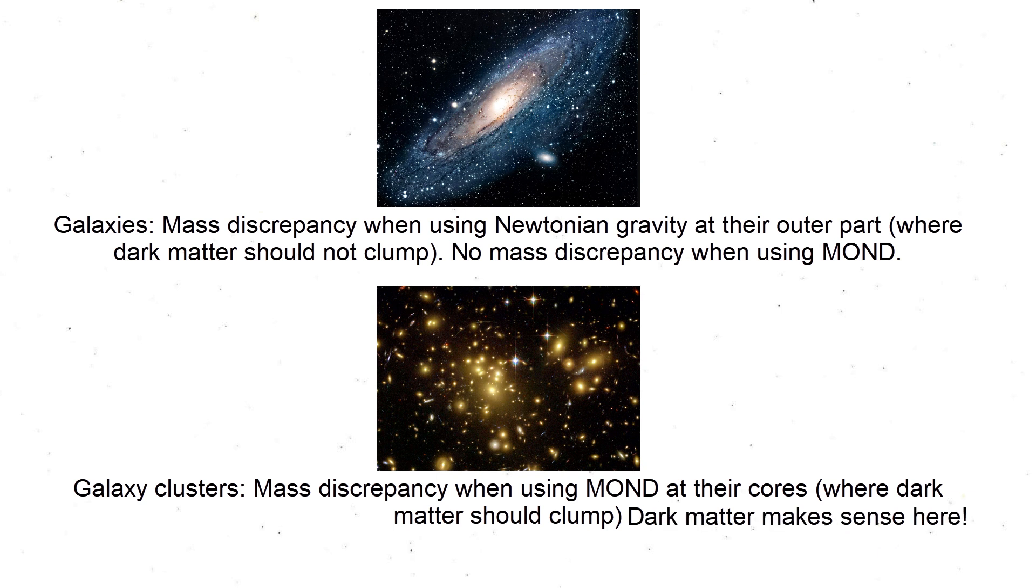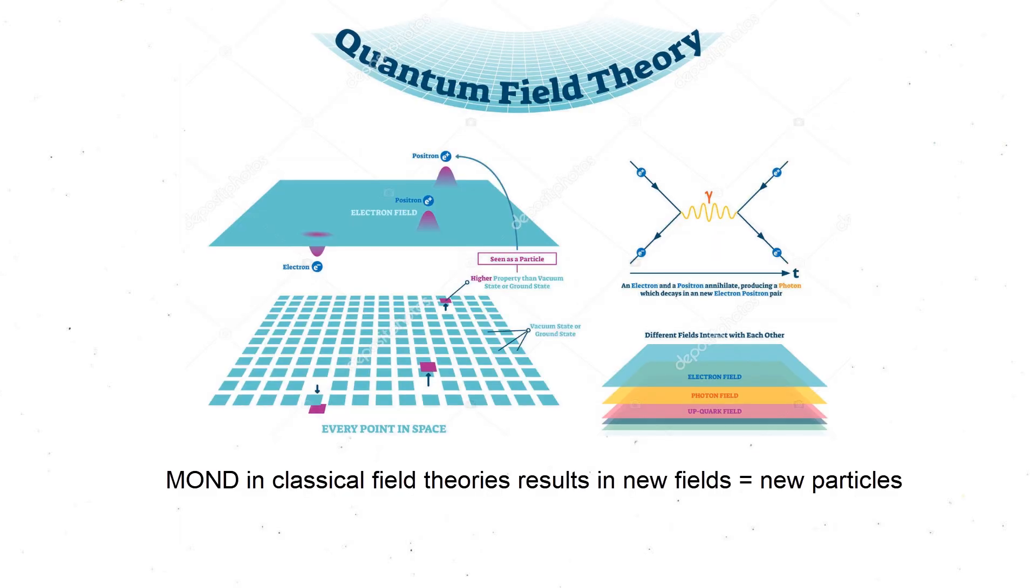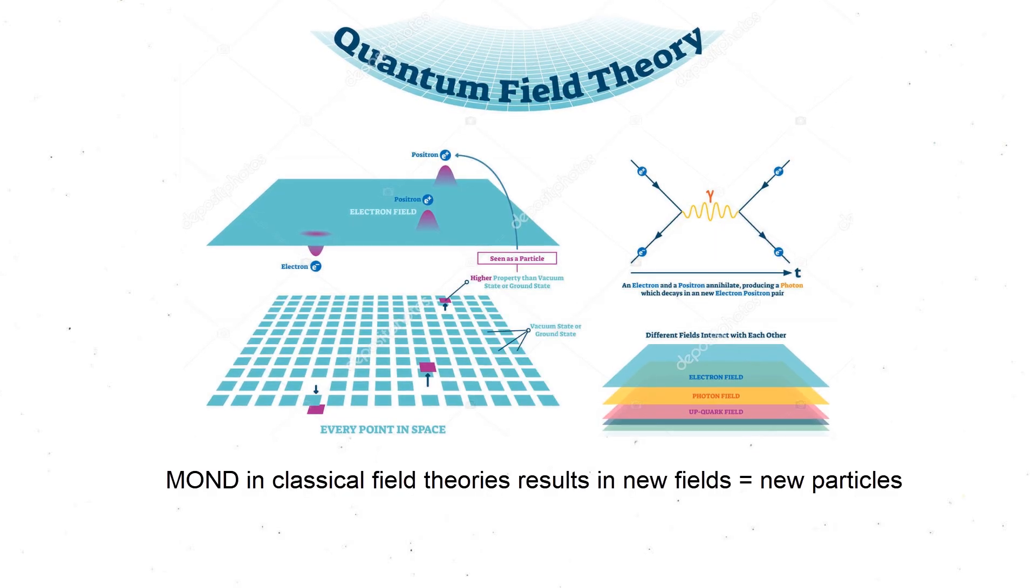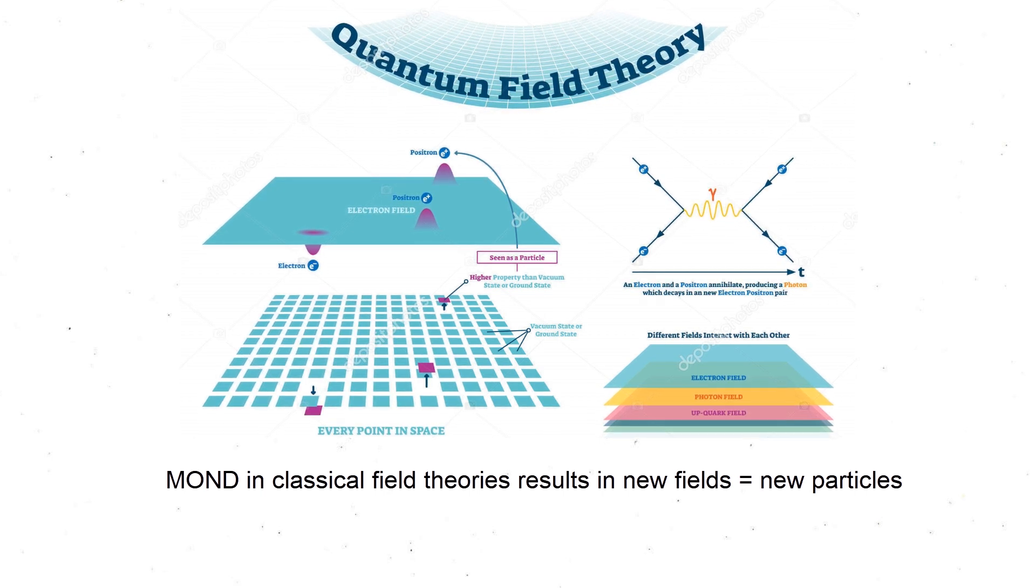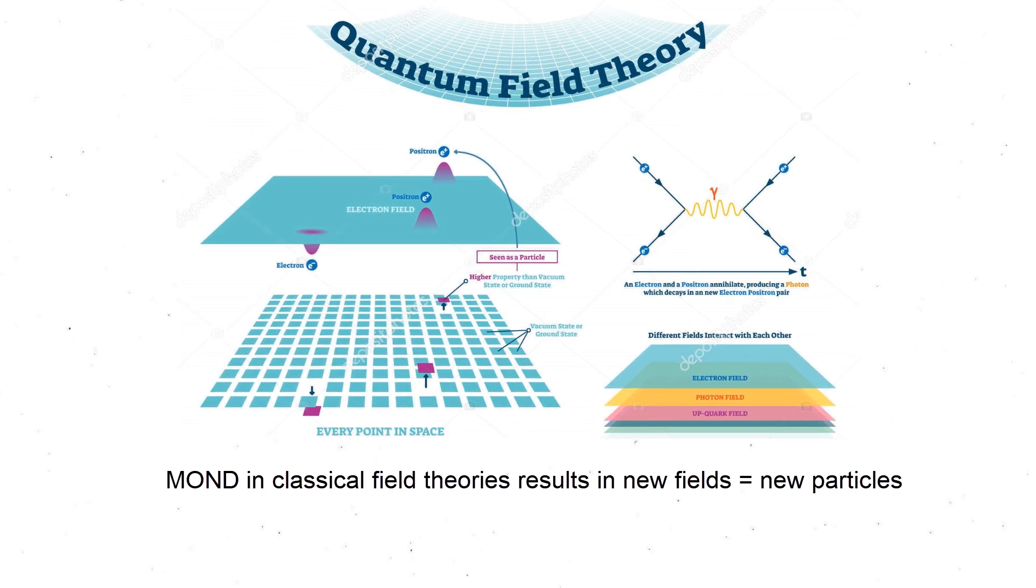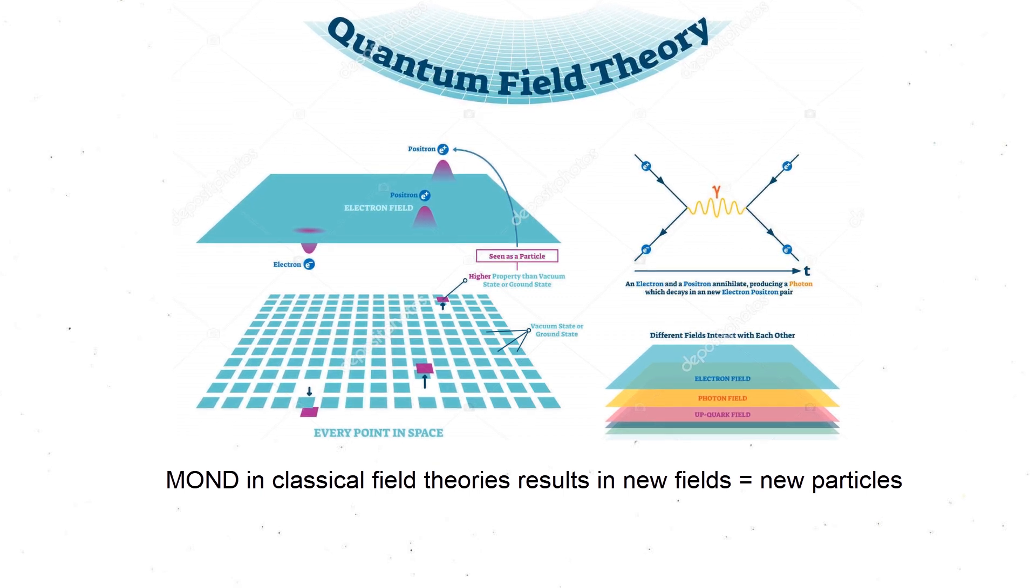While this could be a solution to the CMB, the effects of dark matter in the early universe could also be explained by the fact that most attempts to construct a fundamental theory rely on additional or extra fields, which must be accompanied by a particle related to that field according to quantum field theory, which could be the physical dark matter particle of the CMB power spectrum.